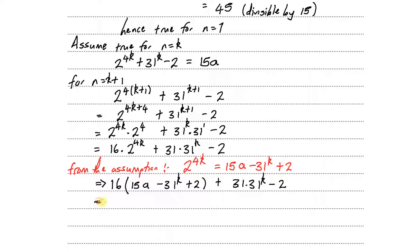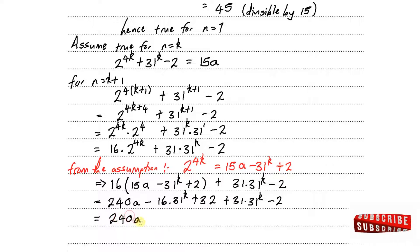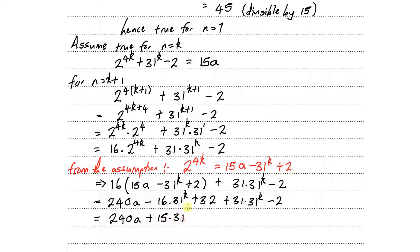Expanding: 16 times 15 is 240, so we have 240a minus 16 times 31 to the power of k, then plus 31 times 31 to the power of k minus 2. Simplifying the 31 to the power of k terms: negative 16 plus 31 gives 15 of 31 to the power of k, and 32 minus 2 gives 30.